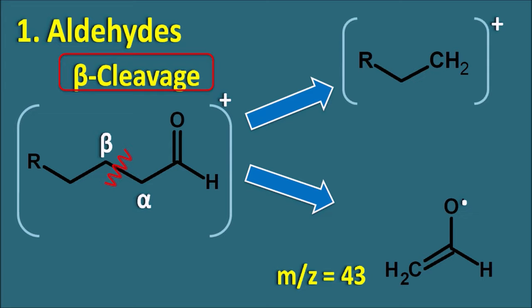The m/z value of this neutral fragment is 43. This neutral fragment is not detected in mass spectroscopy, so we cannot observe any peak at m/z 43. If the molecular ion has mass M, then the fragment ion is observed at M minus 43. So M-43 indicates it is a beta cleavage. In summary, in aldehydes we can observe alpha cleavage (peak at 29), beta cleavage (M-43 peak), and loss of proton (M-1 peak).